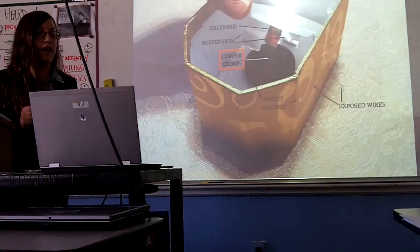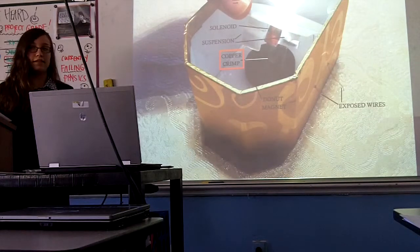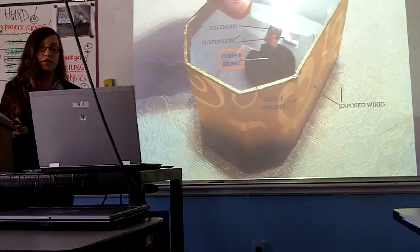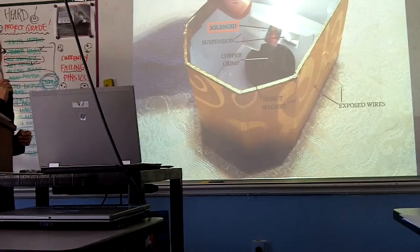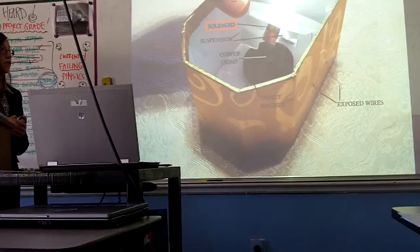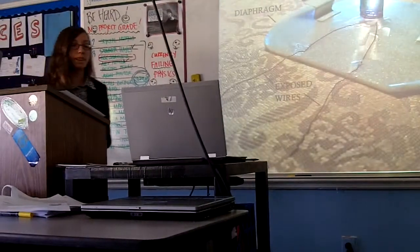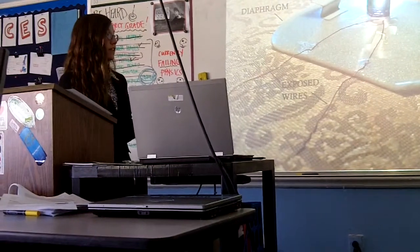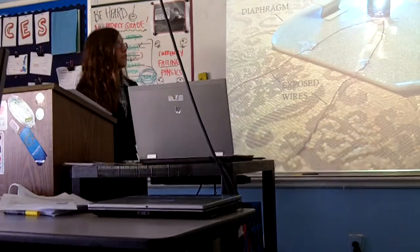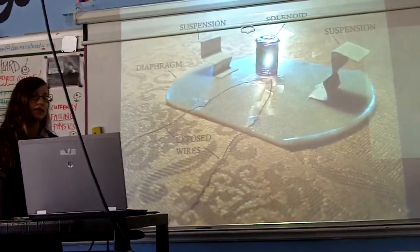Inside the permanent magnet I also glued a copper crimp. This copper crimp doesn't really serve any function except to hold the solenoid in place. The solenoid is a tightly wrapped, tightly looped wire that gives off a magnetic field when electricity is sent through it. The solenoid is not attached to the base. Instead it is attached to the diaphragm, which is a thin, lightweight, disc-shaped object.